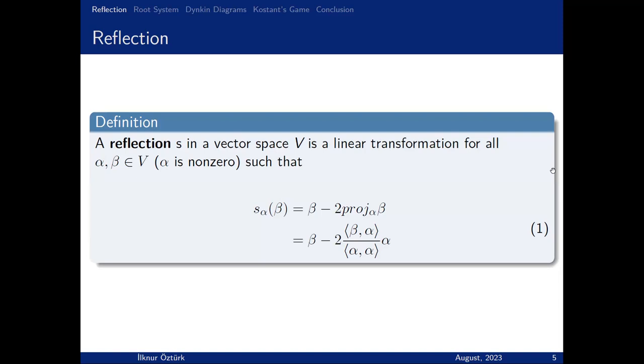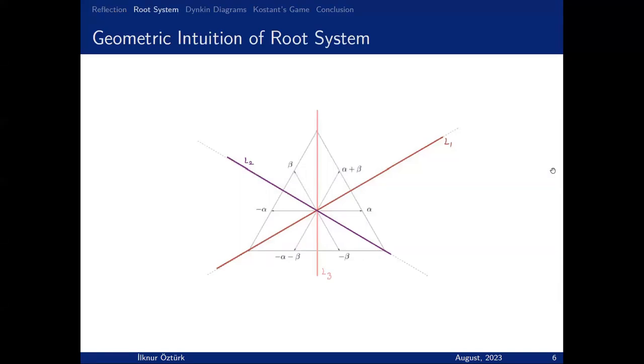Now we are diving into root systems. Before the formal definition, I want to explain the geometric background of the system. This is a triangle. You can see some colored lines, and these lines are reflection lines of the triangle. We can construct vectors as orthogonal to each of these lines. For example, take L3, and the normal vector of L3 is alpha. The reverse one is minus alpha. You can take all of these vectors as orthogonal vectors of each reflection line, and this collection of vectors creates a root system.